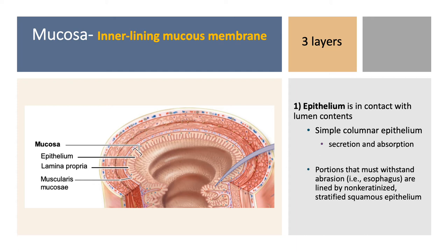The innermost layer in contact with the lumen is the mucosa, an inner lining mucus membrane. Mucus-secreting cells here help protect against the digestive enzymes in that lumen. The mucosa is made up of three sublayers: an epithelial layer, a lamina propria, and a muscle layer. The epithelial layer is in contact with the lumen contents, and most often this is simple columnar epithelium, which is involved in secretion and absorption. In high-abrasion areas like the esophagus, it's instead non-keratinized stratified squamous epithelium.